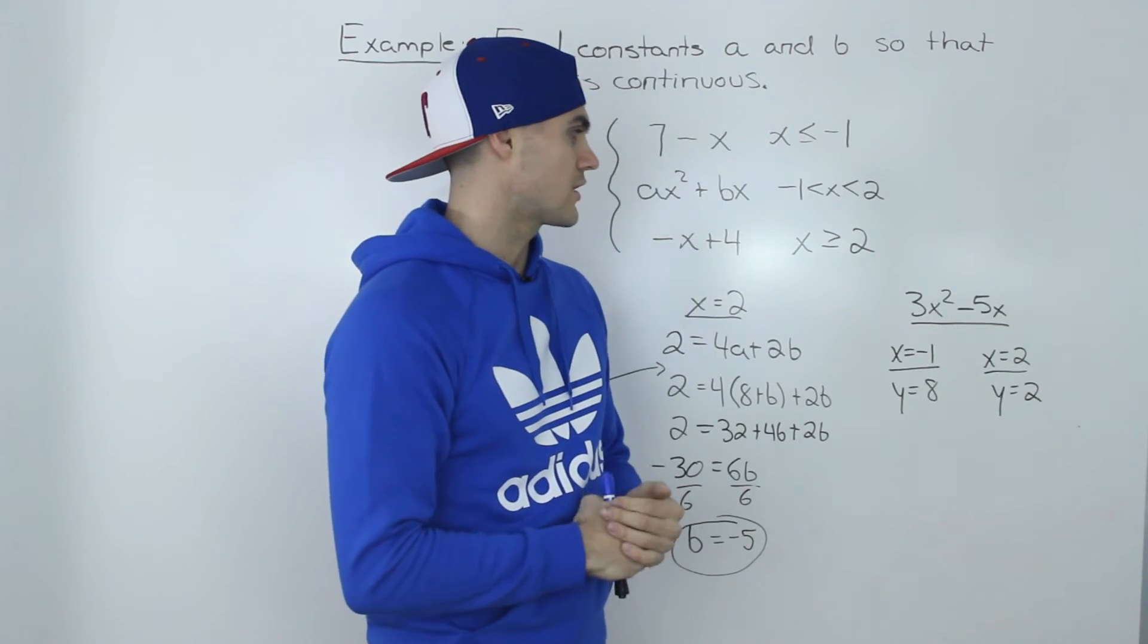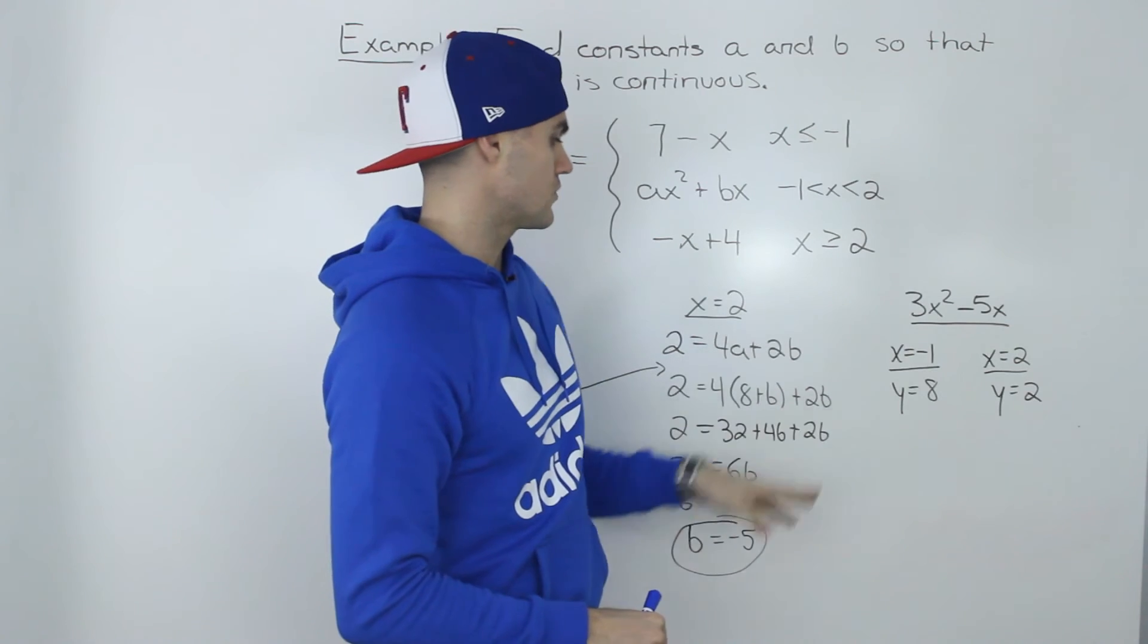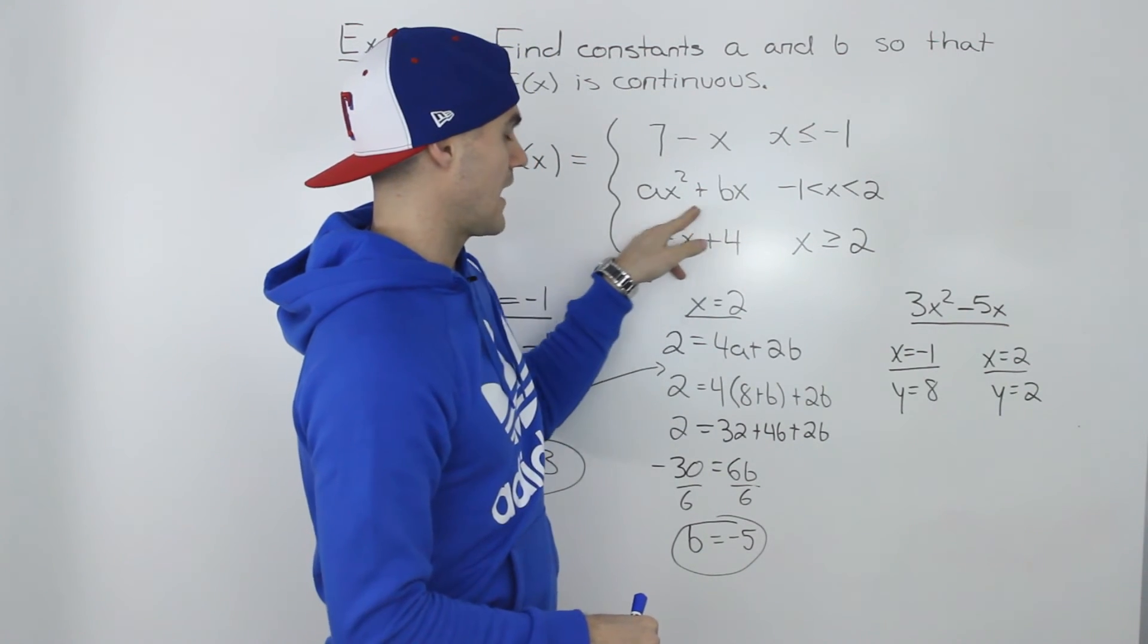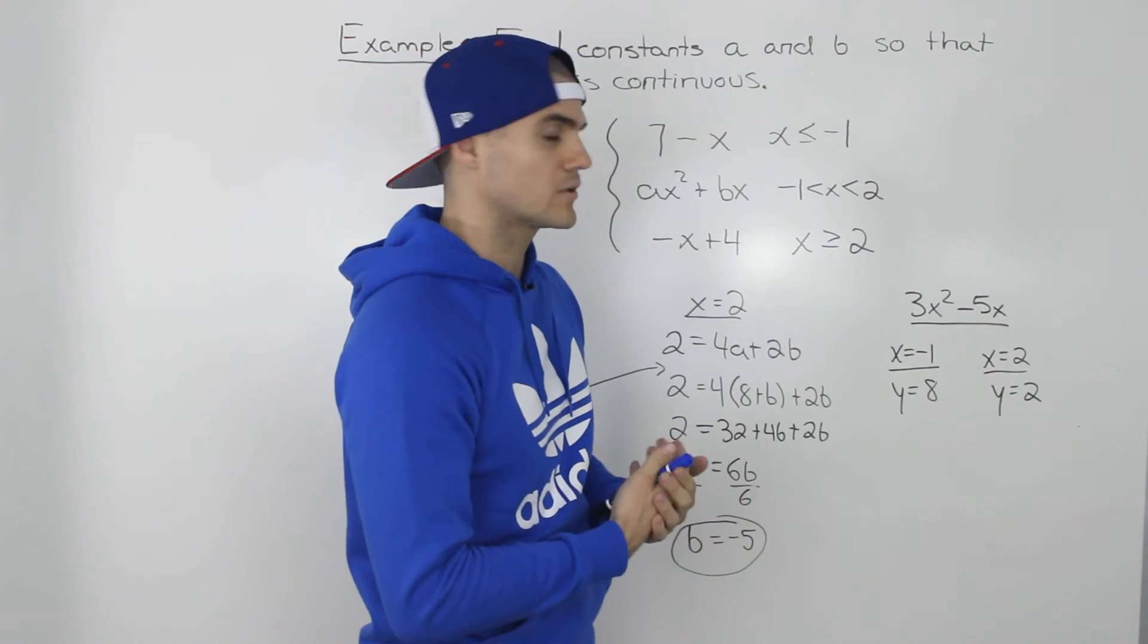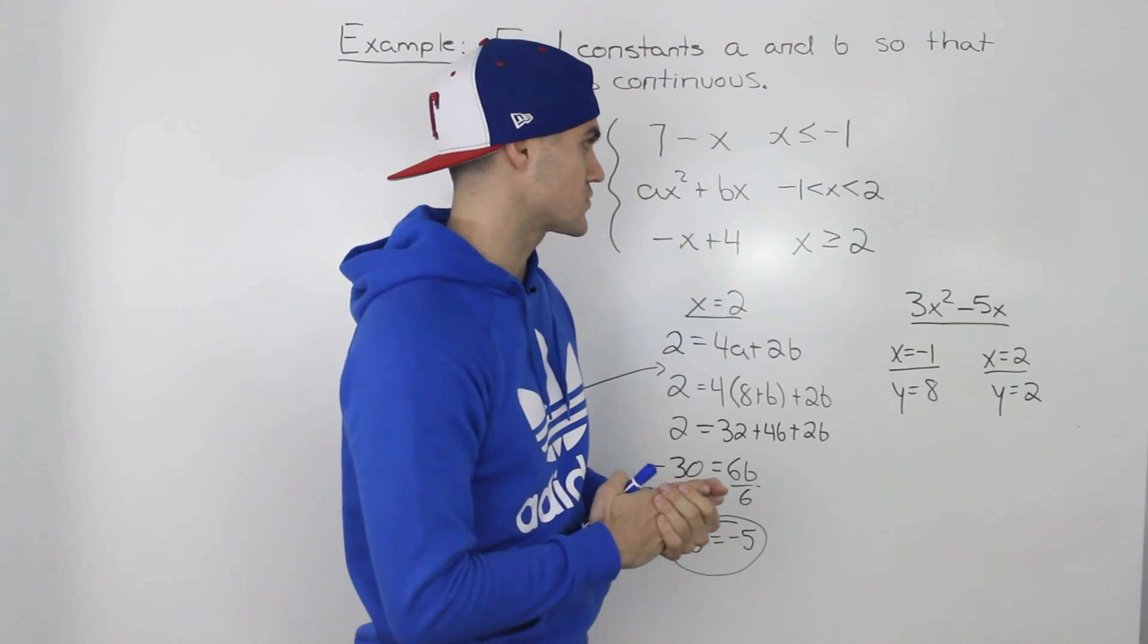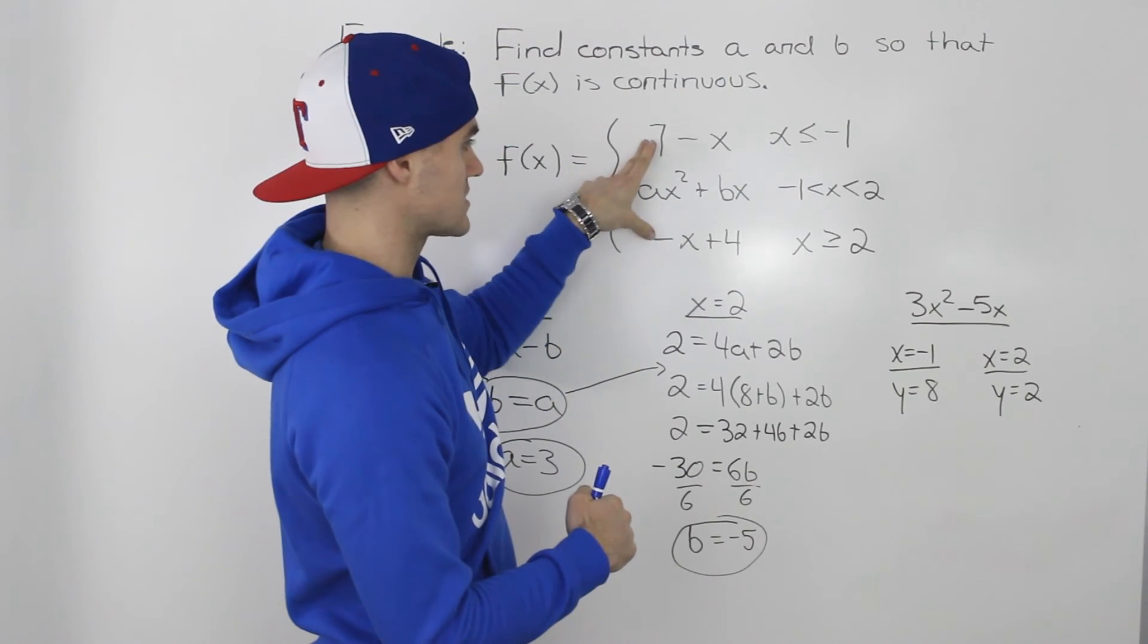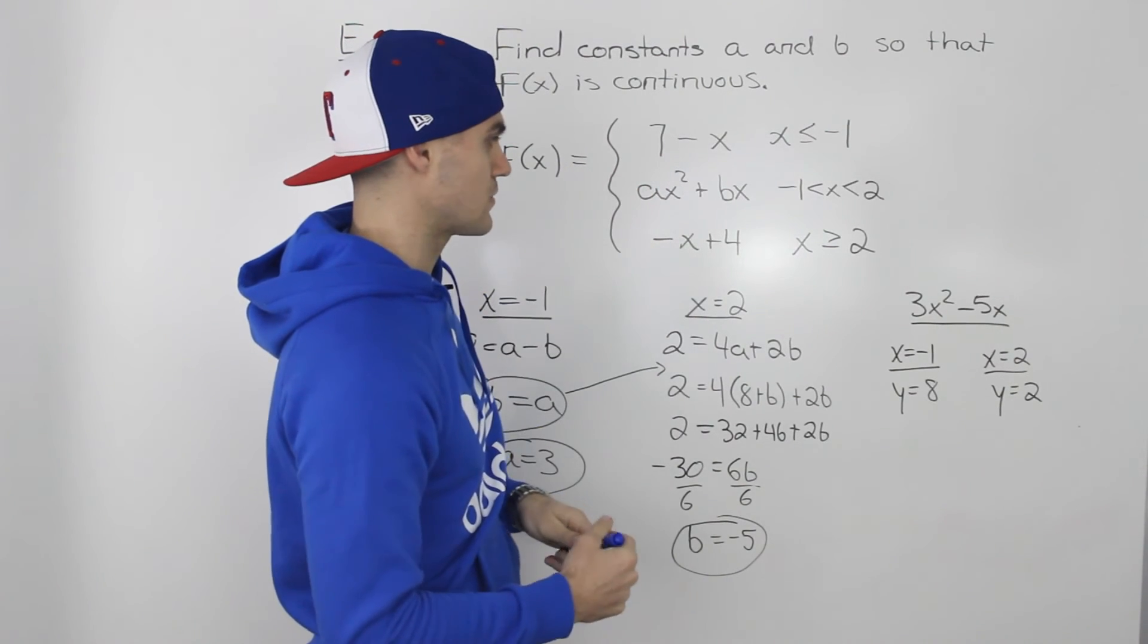You can always quickly check your answer by taking those new constants that you got. We have a function now in the middle of 3x squared minus 5x and seeing what the y values at those meeting points would be and whether they would be the same as the y values of the other pieces that we found.